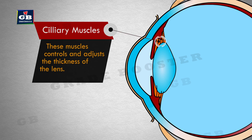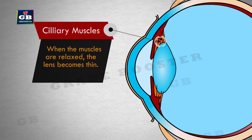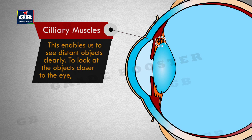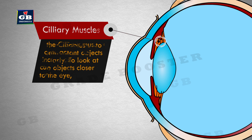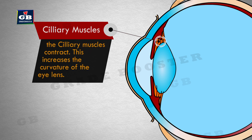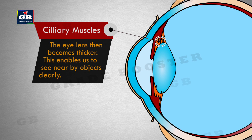These are ciliary muscles. These muscles control and adjust the thickness of the lens. When the muscles are relaxed, the lens becomes thin, enabling us to see distant objects clearly. To look at objects closer to the eye, the ciliary muscles contract. This increases the curvature of the eye lens, making it thicker, which enables us to see nearby objects clearly.